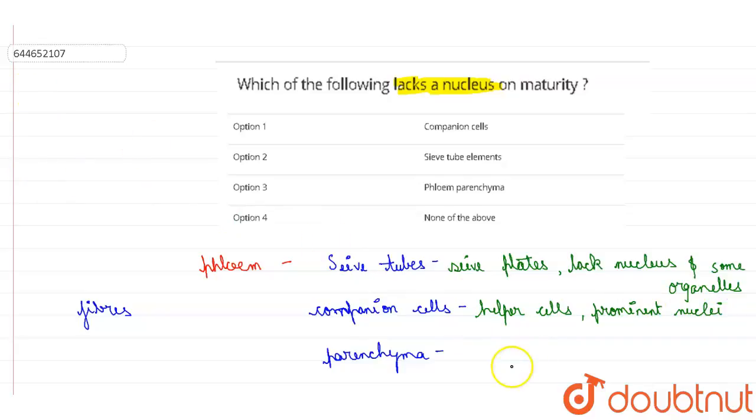Now if we talk about this parenchyma tissue, this parenchyma tissue helps in the storage of food. And if we talk about fibers, these phloem fibers give mechanical support to the plant.